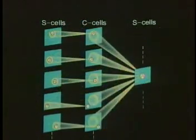The feature extracting cells in the network are called S-cells. After each layer of S-cells, a layer of another kind of cells, called C-cells, is inserted.